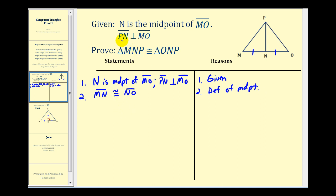Next, because segment PN is perpendicular to segment MO, we know that angle PNM and angle PNO will be right angles.